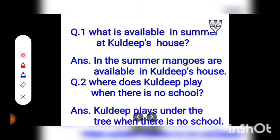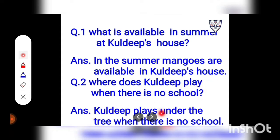Let's see the questions now. Question number 1: What is available in summer at Kuldeep's house? Answer: In the summer, mangoes are available in Kuldeep's house. Question number 2: Where does Kuldeep play when there is no school? Answer: Kuldeep plays under the tree when there is no school.